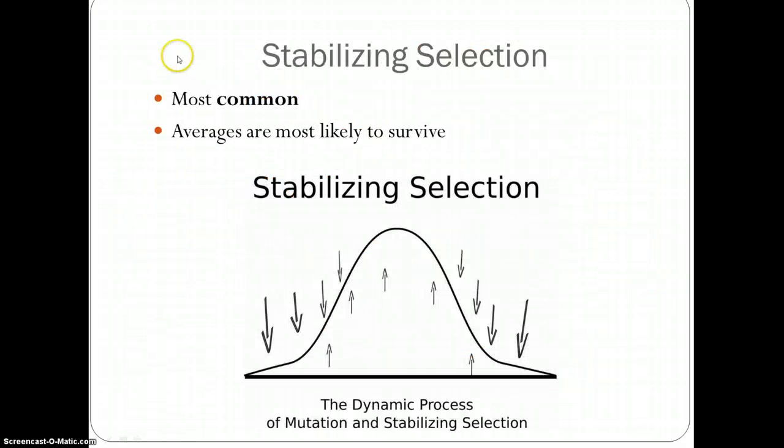Now we are discussing various types of natural selection. There are several types but we are going to explain the three most common types. The first one is known as stabilizing natural selection. Before we even go on to explain what it is, we have to say that this is the most common type of natural selection we see in nature.